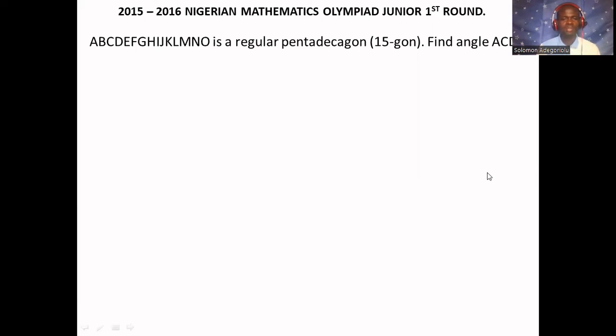The question says, ABCDEFGHIJKLMNO is a regular pentadecagon, 15-gon. That means a regular polygon with 15 sides. Find angle ACD.